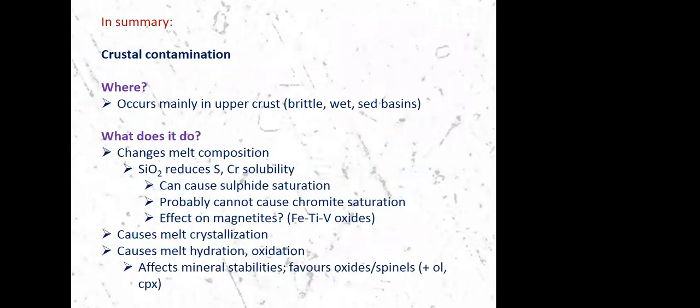So my wrap up here is that the effects of crustal contamination are that we were mainly expected to occur in the upper crust, but that doesn't mean it can't happen elsewhere. And the main effects are changes to the melt composition. And we should remember that that's not always making it more granitic. The effects of adding carbonate and adding water to the melt might have significantly different and much more profound kinds of effects. It drives crystallization of the melt, and it causes hydration and oxidation of the melt, ultimately favoring specific silicate minerals over others, in particular oxide minerals, such as the spinels, magnetite and chromite. And with that, I will thank you very much and open it up to questions.